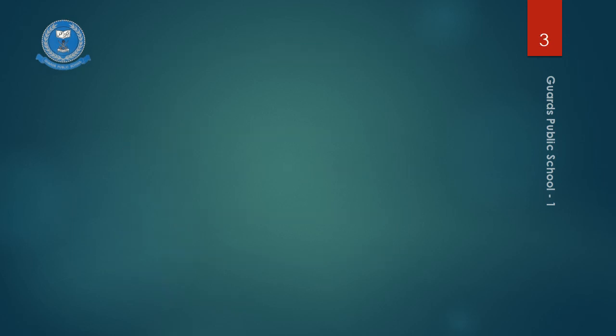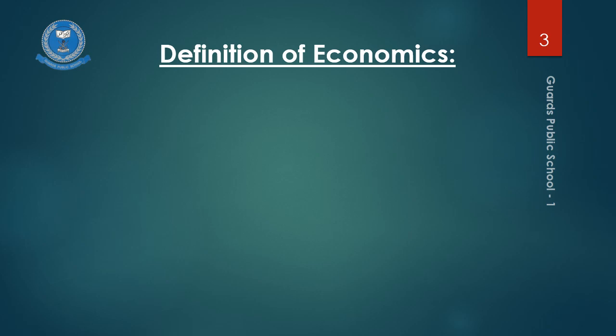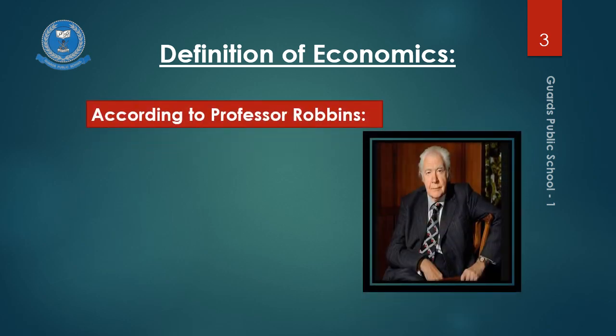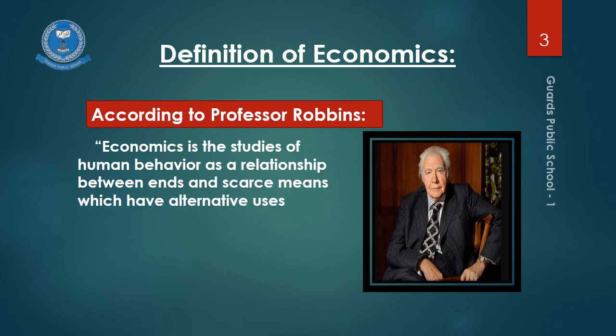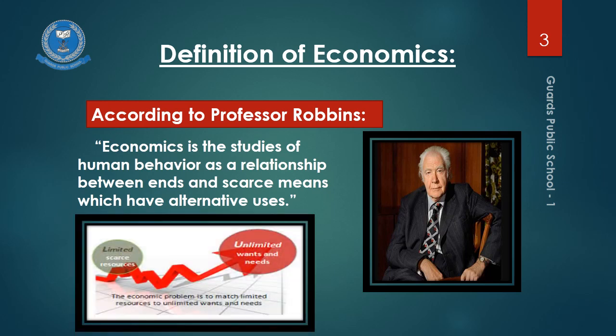Now look at this slide. Here definitions of economics are given. There are so many definitions given by various economists, but the most popular definitions are given by Professor Robbins and Professor Marshall. Robbins says that economics studies human behavior as a relationship between ends and means which have alternative uses. This definition is based on the fact that man is a bundle of wants. Our wants are unlimited, but the resources to fulfill these wants are limited. So Robbins says that we have to follow a line of action to attain the immediate wants.